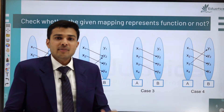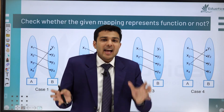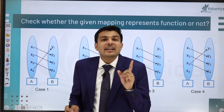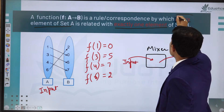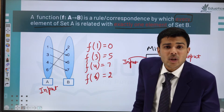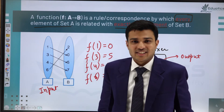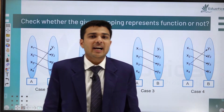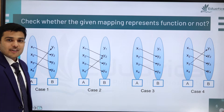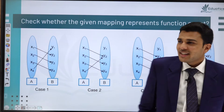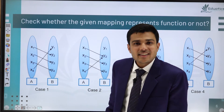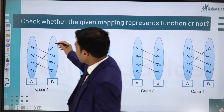Now let's understand: every element of set A must have an answer, and only one answer. Look at Case 1: x1→y2, x2→y3, x3→y4, x4→y1. Every input has an answer, and each input has exactly one answer. So this is a function.